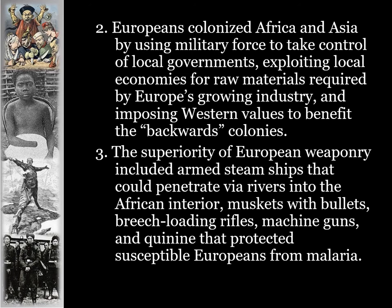The superiority of European weaponry included armed steamships that could penetrate Africa going upriver into the African interior. They also had muskets with bullets, breech-loading rifles, machine guns, and quinine — a drug that protected susceptible Europeans from malaria. These were all tools that the Europeans used to penetrate the African continent.